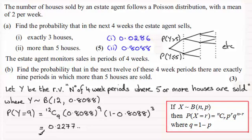And if we round this to three significant figures, that's going to be 0.228 to three sig figures, 3SF for short.